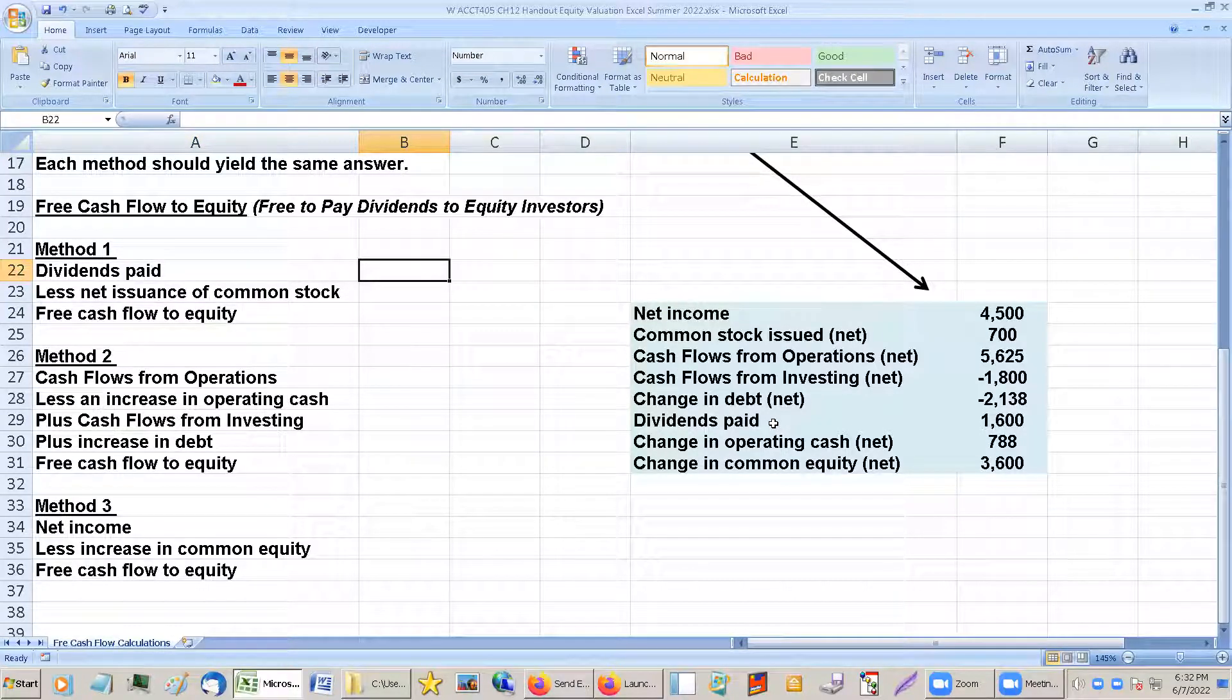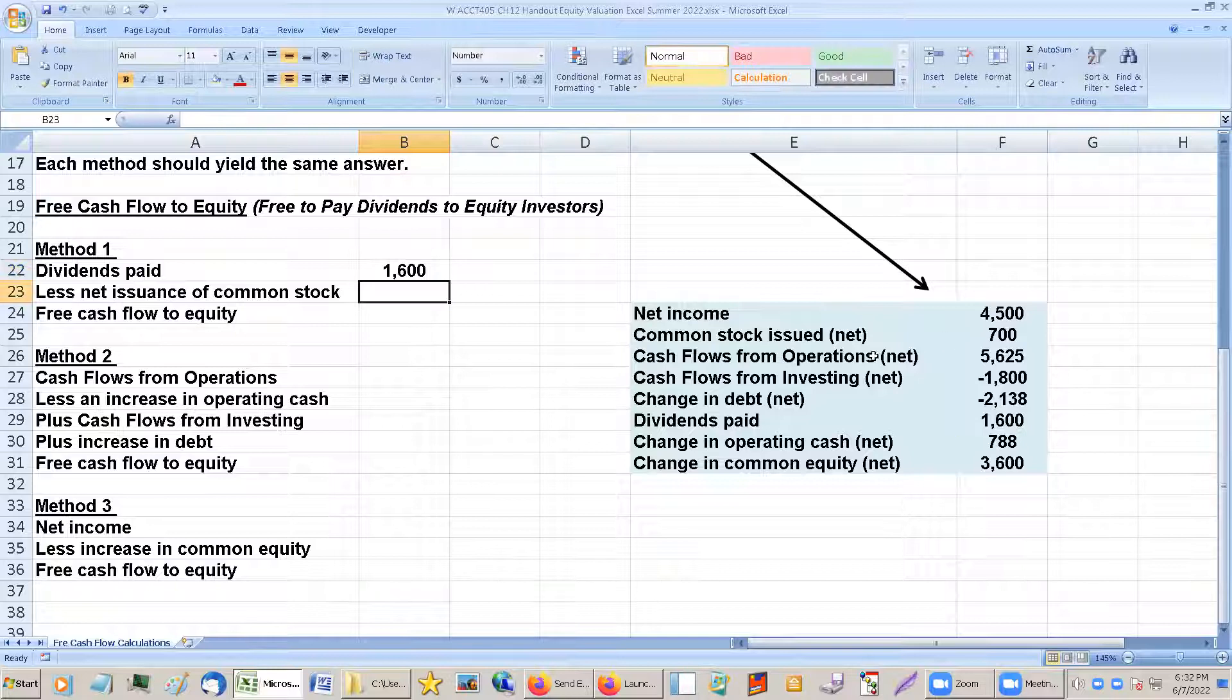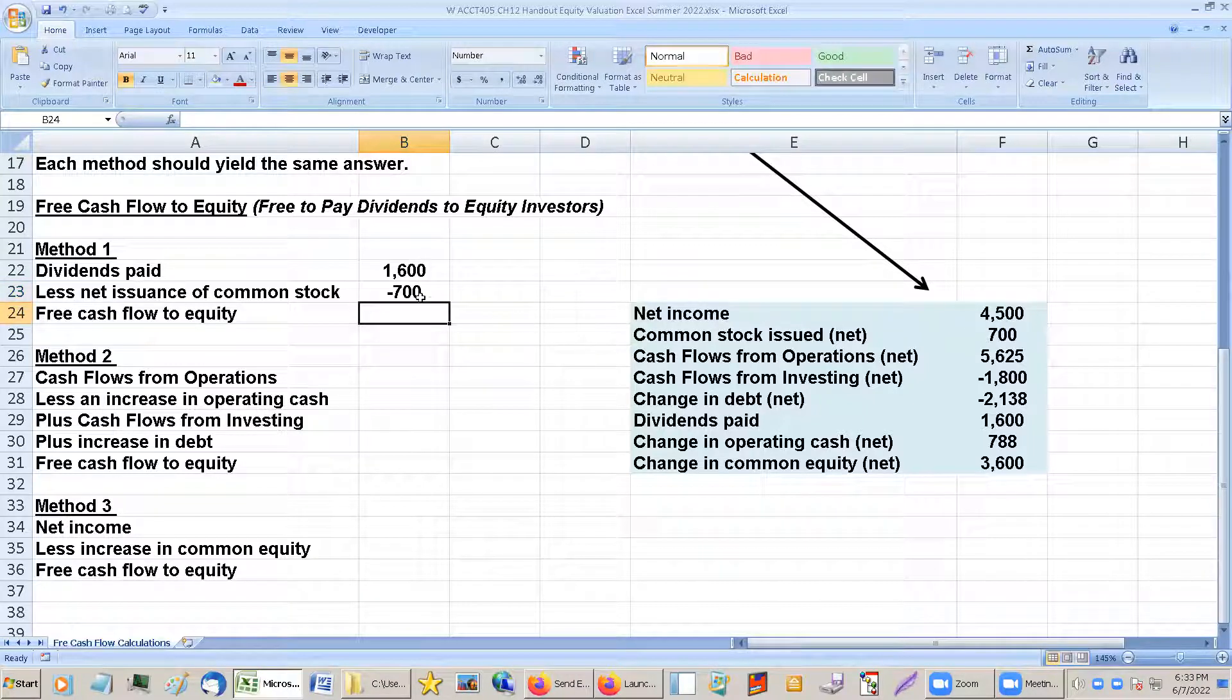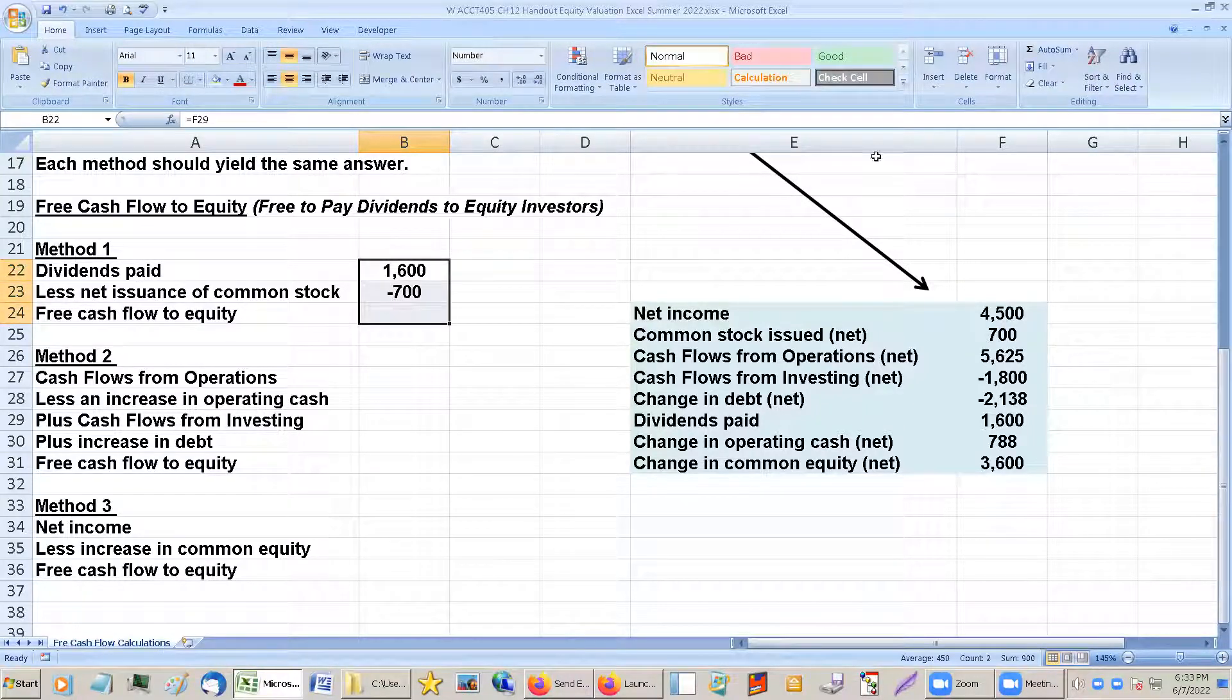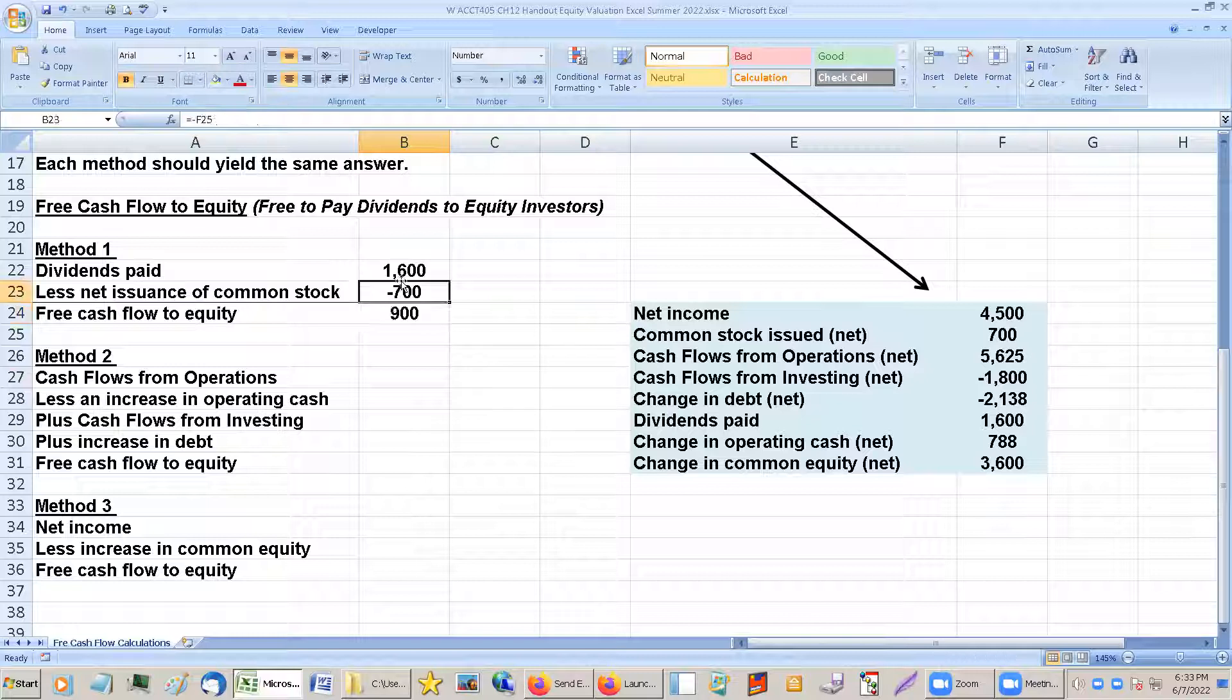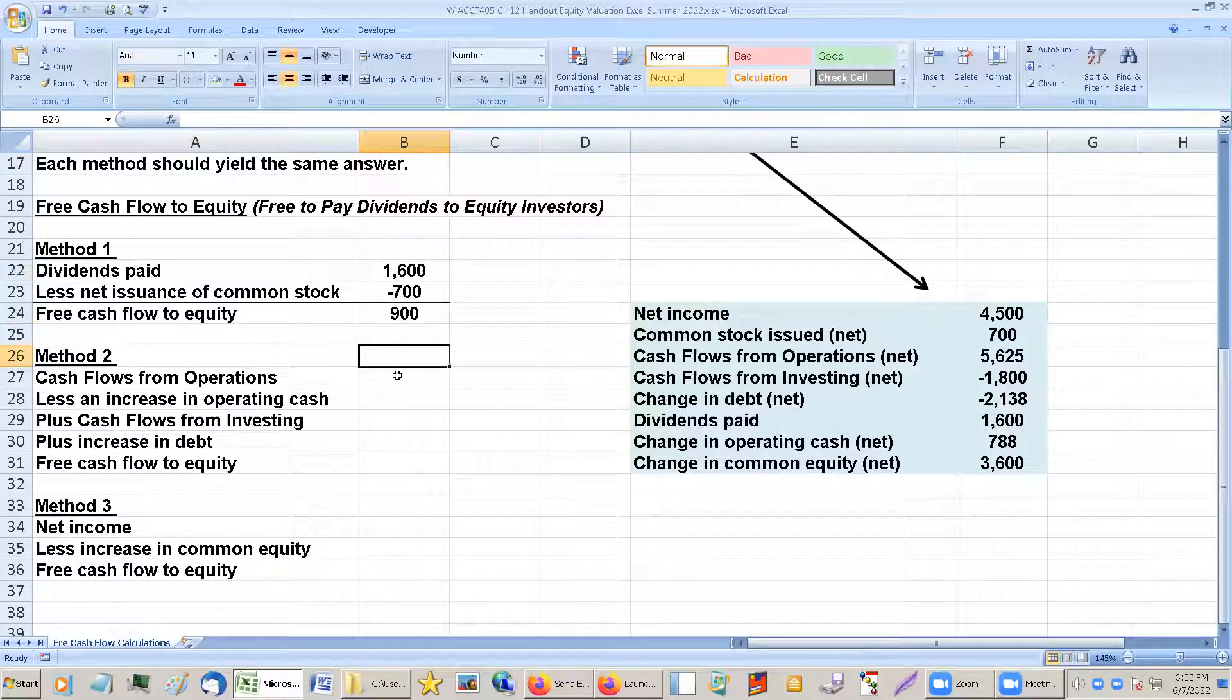So the first one says dividends paid. So I'm just going to go over and grab dividends paid, less any net issuance of common stock. So this one's pretty easy. The thing is it's probably not, if they already are paying dividends, you may just want to use the discounted dividend model. But regardless, the other two are probably more commonly used because it's for companies that are not using this model.